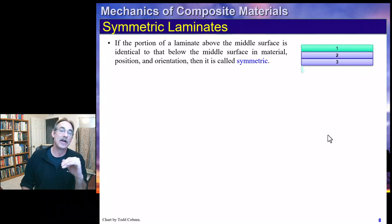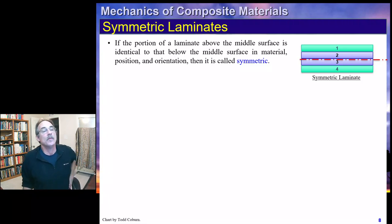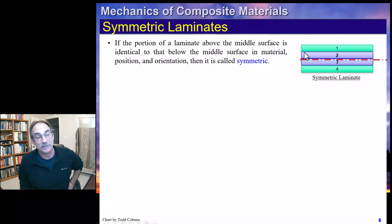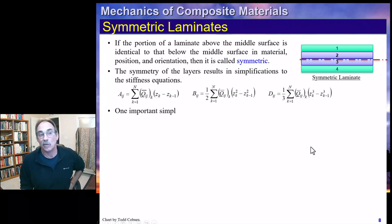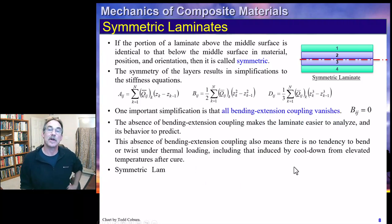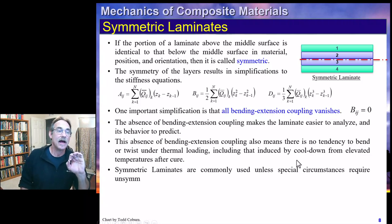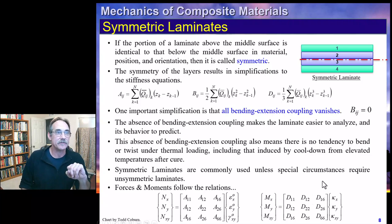Now switching from single layers to full laminates — symmetric laminates are like placing a mirror at the midplane, where everything is the same order, thickness, and stiffness moving away from the midplane in either direction. A symmetric laminate has a very positive property: the B matrix vanishes, making running loads and curvatures uncoupled, and running loads and moments uncoupled.